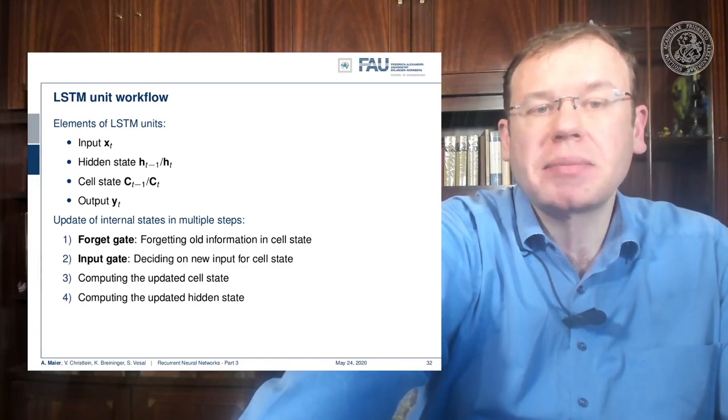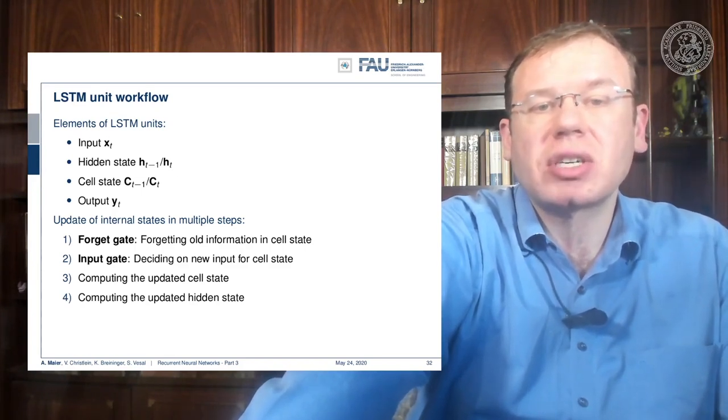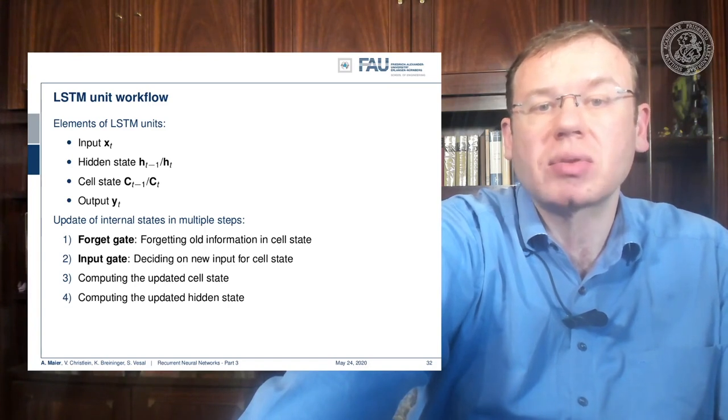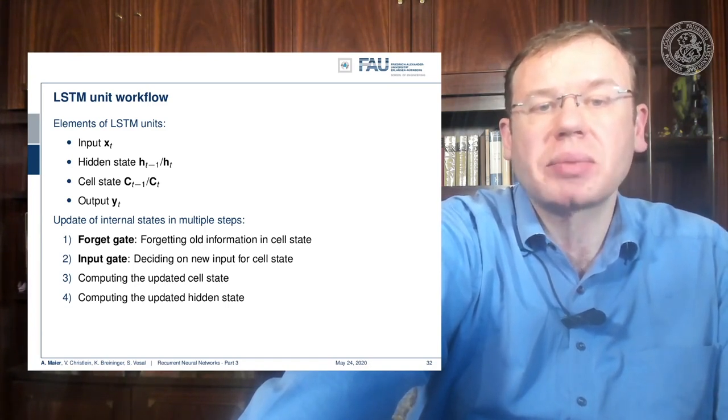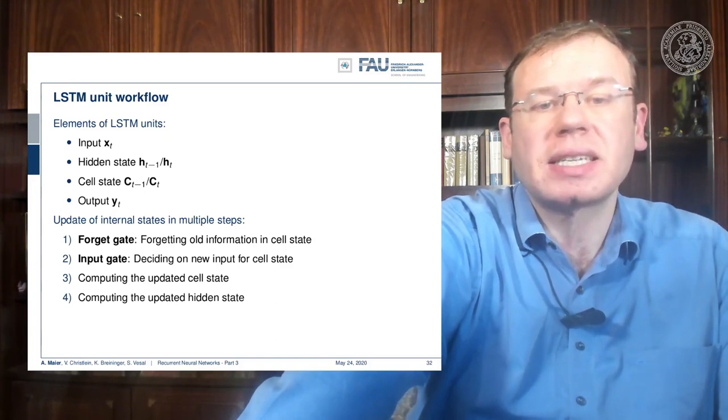Then we have the input gate and this is essentially deciding new input into the cell state. From this we then compute the updated cell state and the updated hidden state.